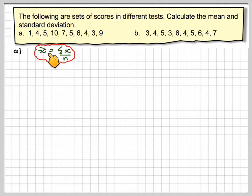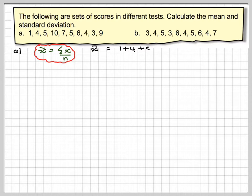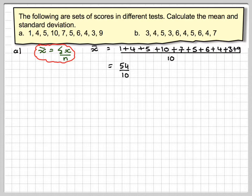The mean — we know how to calculate — is x-bar = σx / n. That means we add them all up and divide by the number of items, which gives me 54 out of 10, which is 5.4.